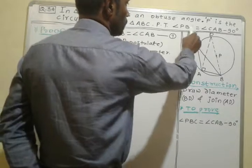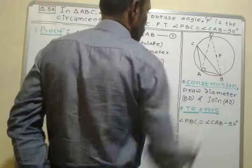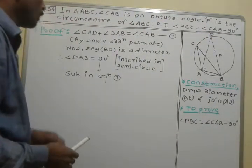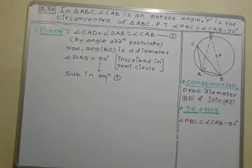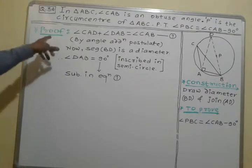To prove: angle PBC is equal to angle CAB minus 90 degrees. This is our statement to prove. Now, the important part of our example is the proof.